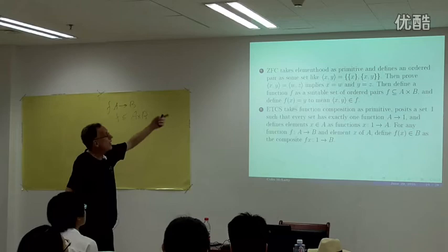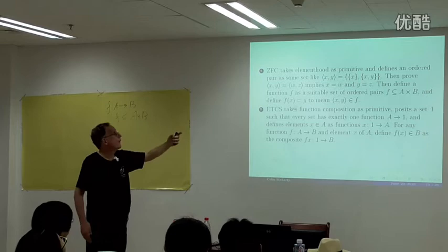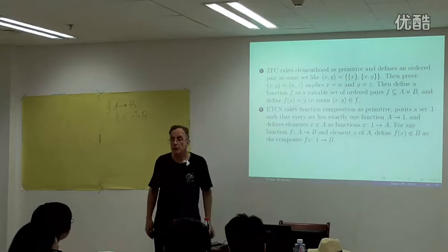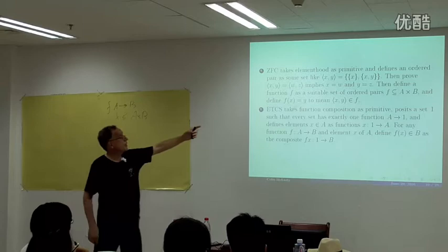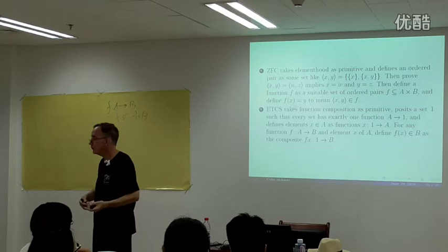ZFC takes element-hood as primitive, defines an ordered pair as some set, and then defines a function as a set of ordered pairs — a subset of the product — and defines f(x) = y to mean the pair (x, y) is in that subset. In ETCS we take function composition as primitive, posit a set 1 such that every set has exactly one function to it, define elements as functions from 1, and define the value of a function as the composite.